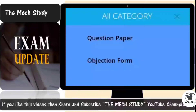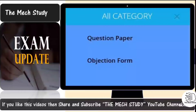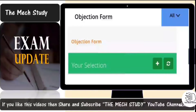First, on the question paper, mark the questions where you think the answer is wrong or there is some minor correction needed. Just mark the question ID, then go back and come to the objection form and click on it.